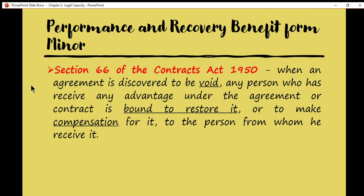When discussing issues on minority — since the contract is void — we use Section 66 of the Contracts Act. Section 66 states: when an agreement is discovered to be void, any person who has received any advantage under the agreement or contract is bound to restore it or to make compensation for it to the person from whom he received it. Every time you conclude that a contract is void, this section is compulsory to discuss. Under a void contract, if a person received a benefit, he must restore it or make compensation. In the case of a minor, when he entered into a contract and the contract is discovered to be void, the minor is bound to restore it or to make compensation to the other party.